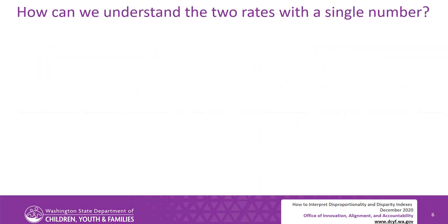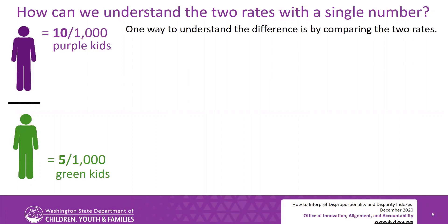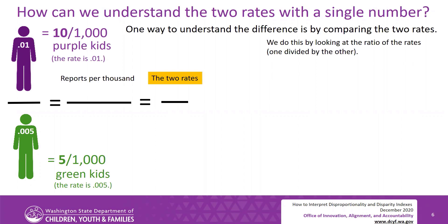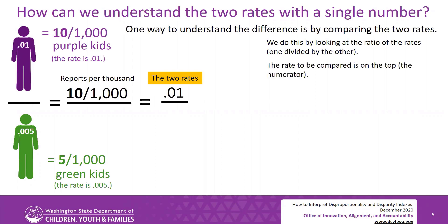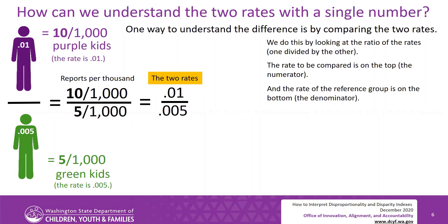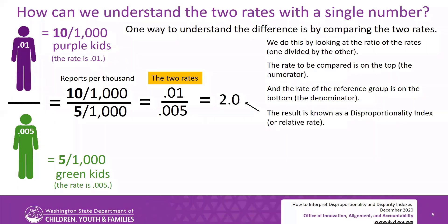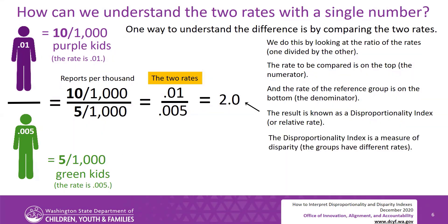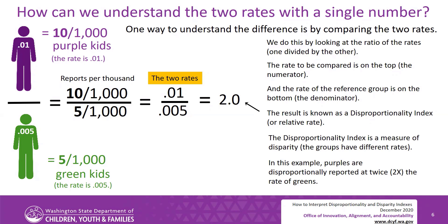How can we understand the two rates with a single number? One way is by comparing the two rates — by looking at the ratio of the rates, one divided by the other. The rate to be compared is on the top, the numerator, and the rate of the reference group is on the bottom, the denominator. The result is known as a disproportionality index, or relative rate. The disproportionality index is a measure of disparity — the groups have different rates. In this example, purples are disproportionately reported at twice, two times, the rate of greens.